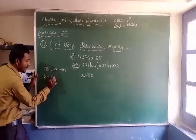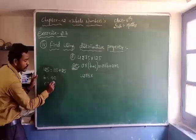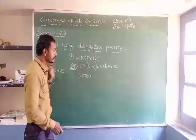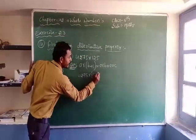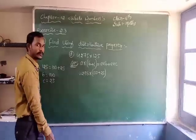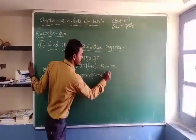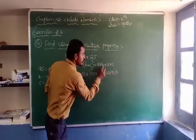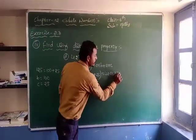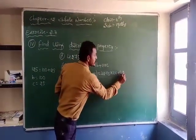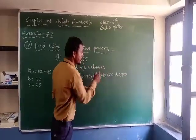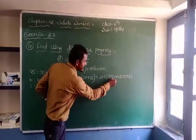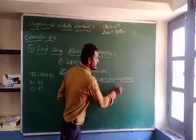Here, B is equal to 100 and C is equal to 25. Putting B and C into this property: B means 100 plus C means 25. Then on the right side, A means 4275 into B means 100, plus A means 4275 into C means 25. Just you have to find the product of these two numbers also.